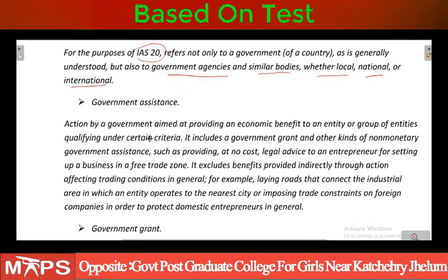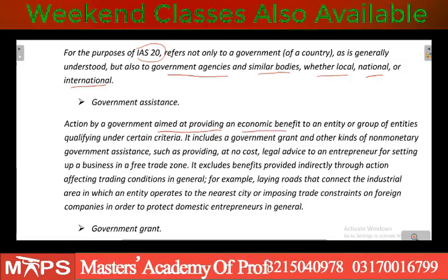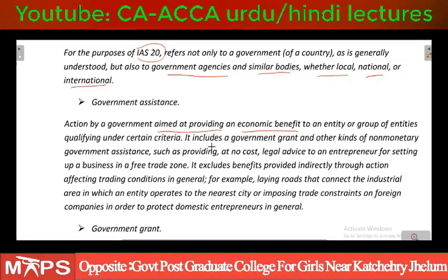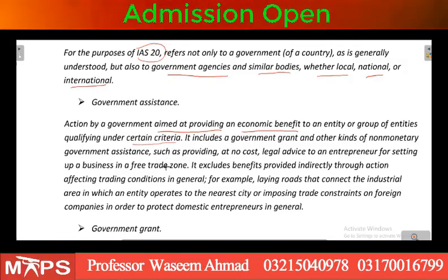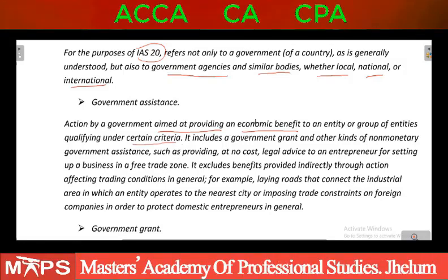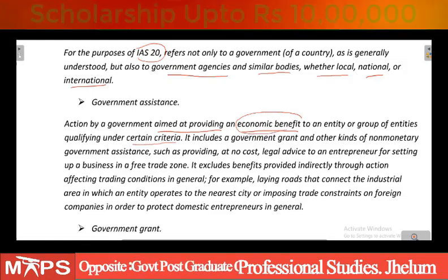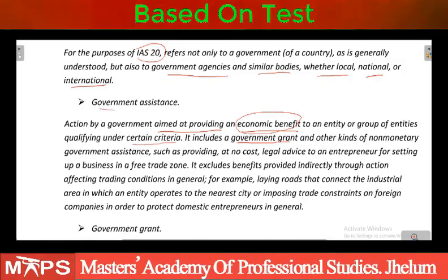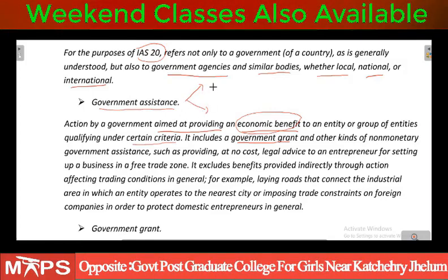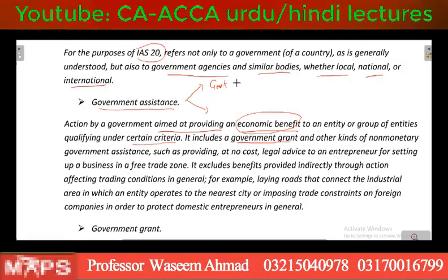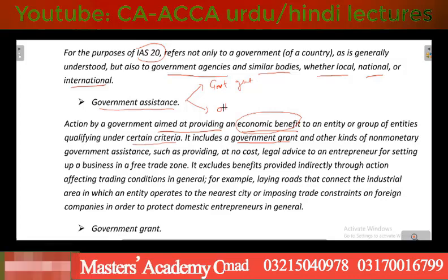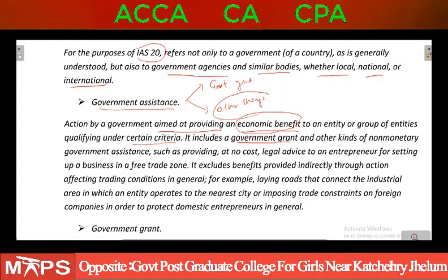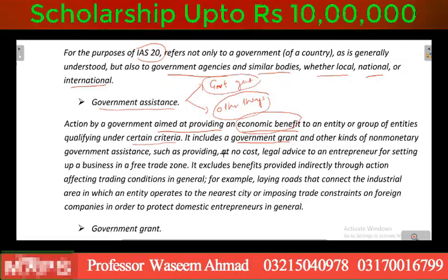Government Assistance: actions by a government aimed at providing an economic benefit. Ab economic benefit jab entity ko provide kiya jayega to wo kisi bhi shakal mein ho sakta hai. Under certain criteria, definitely uske saath conditions attach hoti hain ki agar entity wo conditions puri karegi to wo economic benefit us organization ko provide kiya jayega. It includes a government grant. Government grant jo hai wo government assistance mein shamil hai — yani ke government assistance ka hissa hai — lekin there are other things as well jo government assistance mein aati hain.